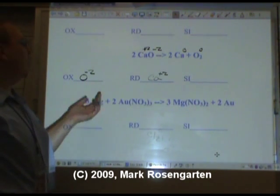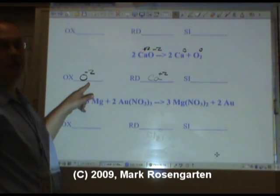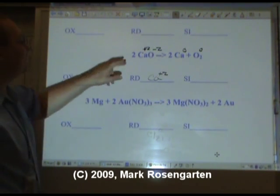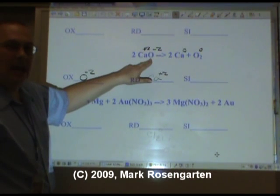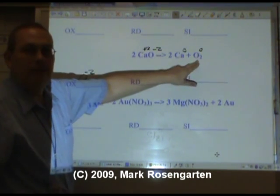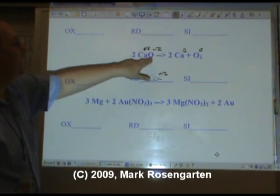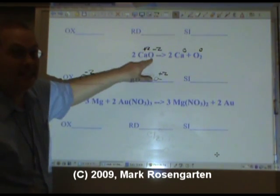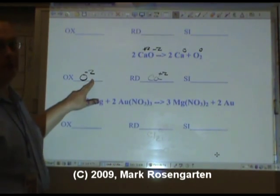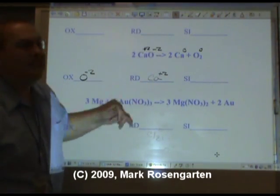Now, you might want to ask, well, why don't we write O2 here, right? Isn't oxygen diatomic? Well, it's not by itself here, you see. Oxygen is only diatomic when it's by itself. And since the change is happening to the oxide ion, which is in a compound, not by itself, we wouldn't write it as being diatomic over here. There is no third species, so there's no spectator ion.